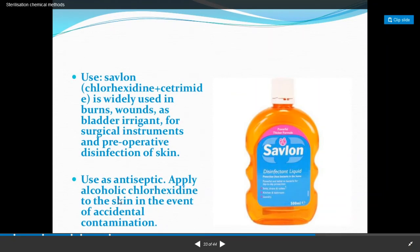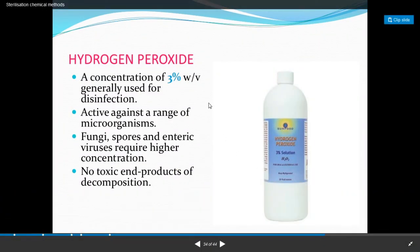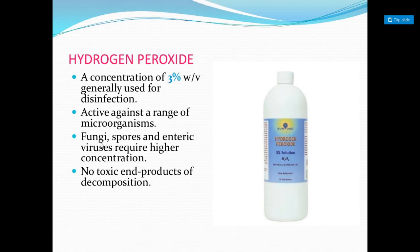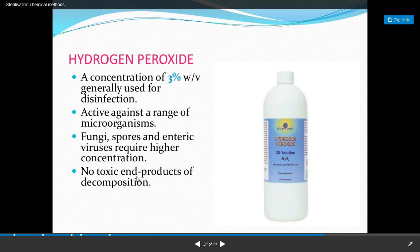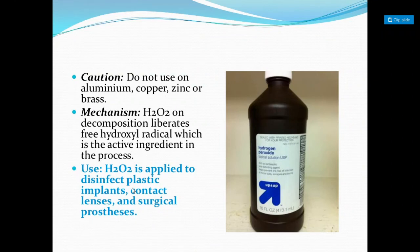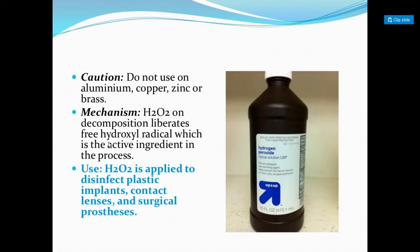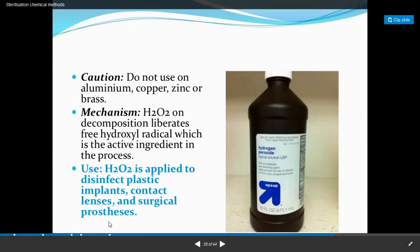Chlorhexidine is used as an antiseptic applied to skin in case of accidental contamination. Hydrogen peroxide (H2O2) at 3% w/v is used for disinfection and is active against a large number of microorganisms including fungi, spores, and enteric viruses (higher concentrations required for some). The mechanism: hydrogen peroxide on decomposition liberates free hydroxyl radicals, which are the active ingredient. Hydrogen peroxide is used for disinfection of plastic implants, contact lenses, and surgical processes. Caution: do not use on aluminum, copper, zinc, or brass.